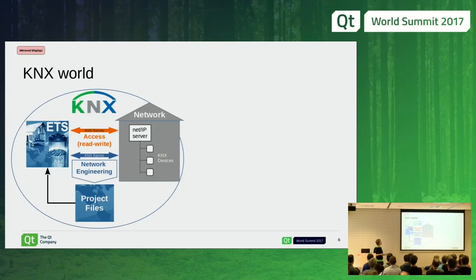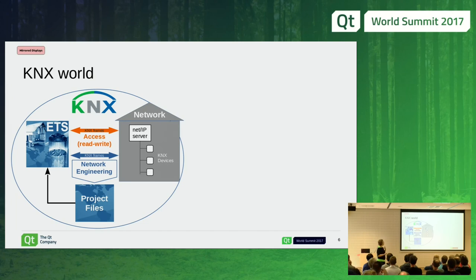This is a very simplified view of the KNX world. Here we have the network with the NetIP server and the KNX devices linked to it. You have the ETS application, which is used to configure the network. After this configuration step, a project file is created. This project file can be fed back to the ETS software, and then thanks to this software we can control the installation. Any contact with the KNX network is done by exchanging KNX frames.